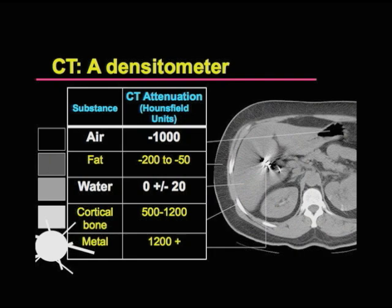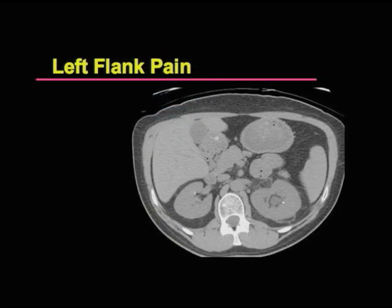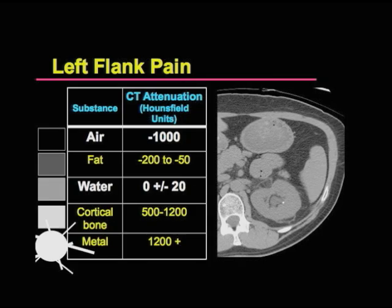By looking at the various densities, we can make different diagnoses. For example, this is a person who has terrible flank pain. If we look carefully at the kidneys, we can see there is something in the kidney — does everyone see this white dot? That's a kidney stone. Kidney stones are made of calcium — it's a type of metal, it's very dense, and we can see it very well.